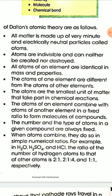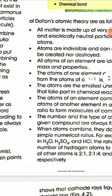For example, in water (H2O), the ratio of hydrogen atoms to oxygen atoms is 2:1. In H2SO4, the ratio of hydrogen to sulfur to oxygen atoms is 2:1:4 — that is 2 hydrogen atoms, 1 sulfur atom, and 4 oxygen atoms. In HCl, the ratio of hydrogen to chlorine atoms is 1:1. These are the postulates or main points of Dalton's atomic theory.